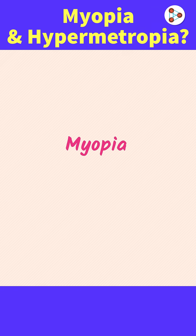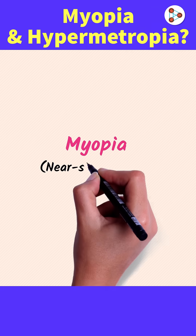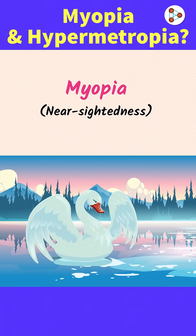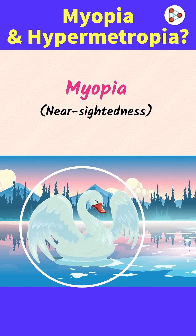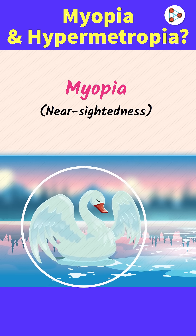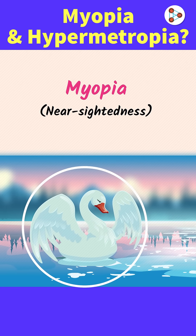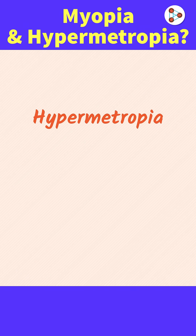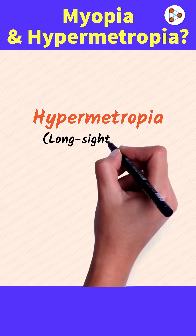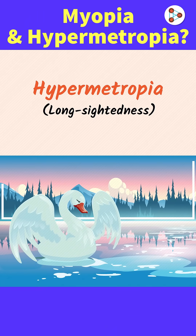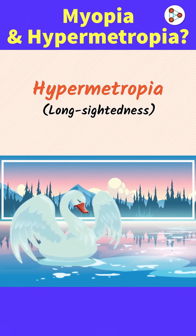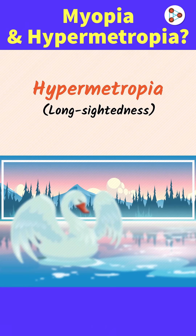Myopia is an eye condition also referred to as near-sightedness. It means a myopic person can see nearby objects clearly and faraway objects not so much. Hypermetropia, on the other hand, is referred to as long-sightedness, which means faraway objects can be seen clearly but not nearby objects.